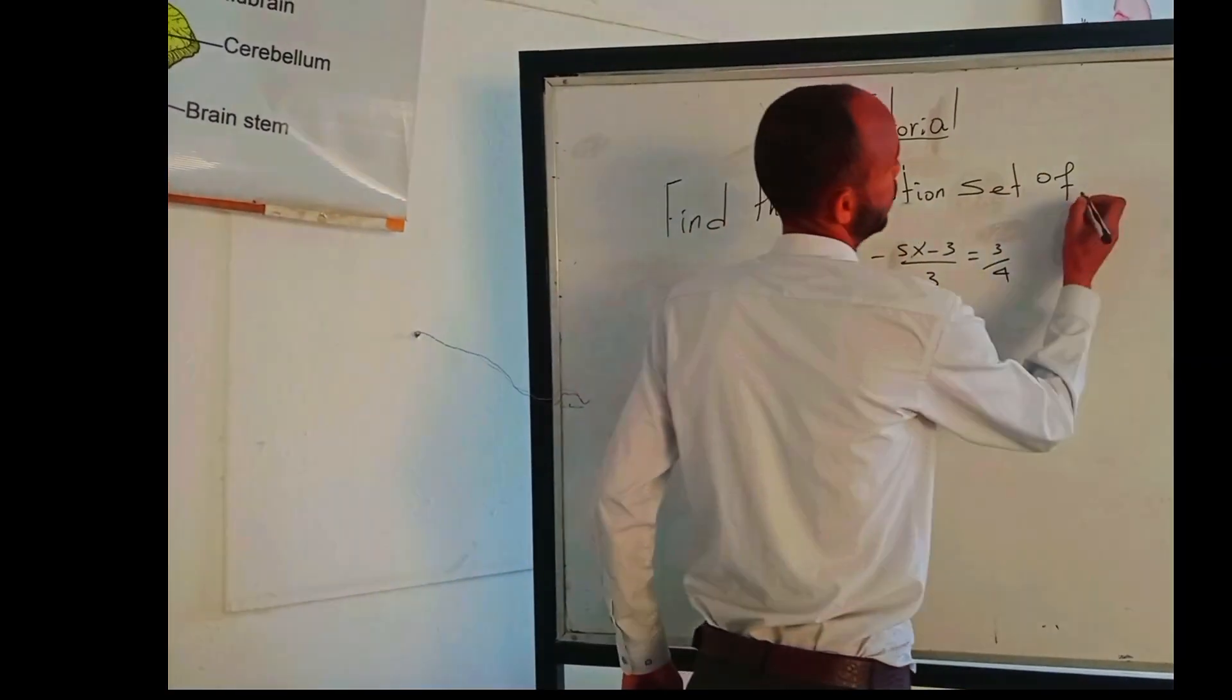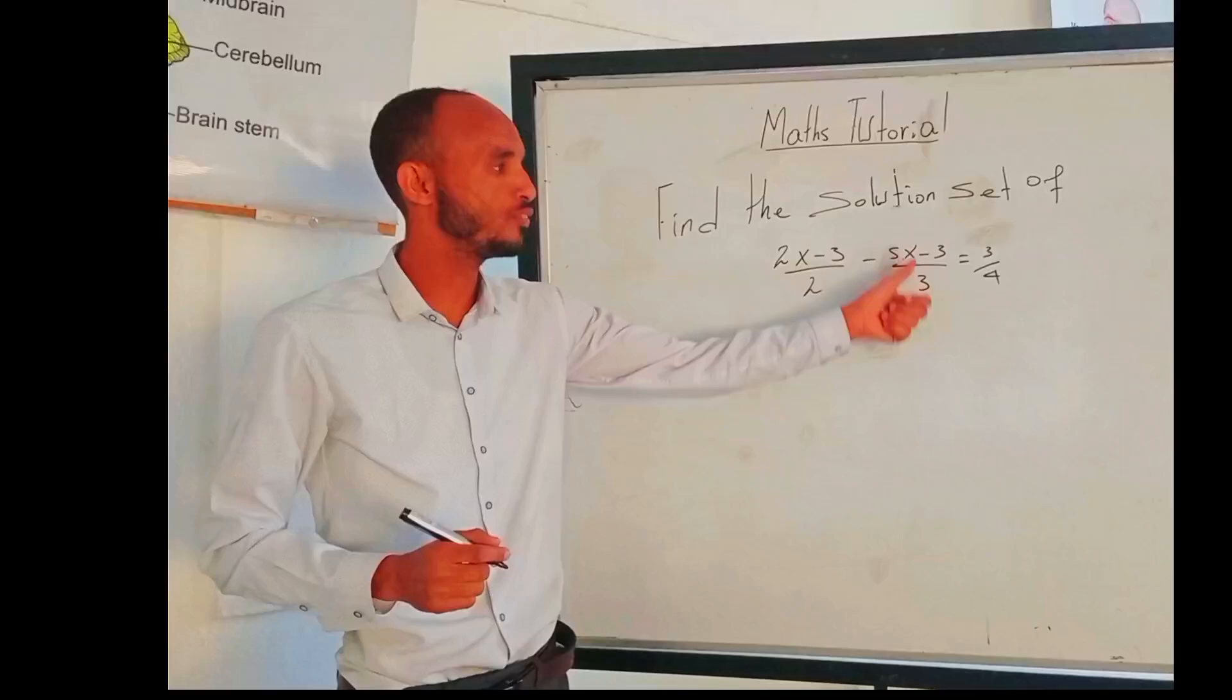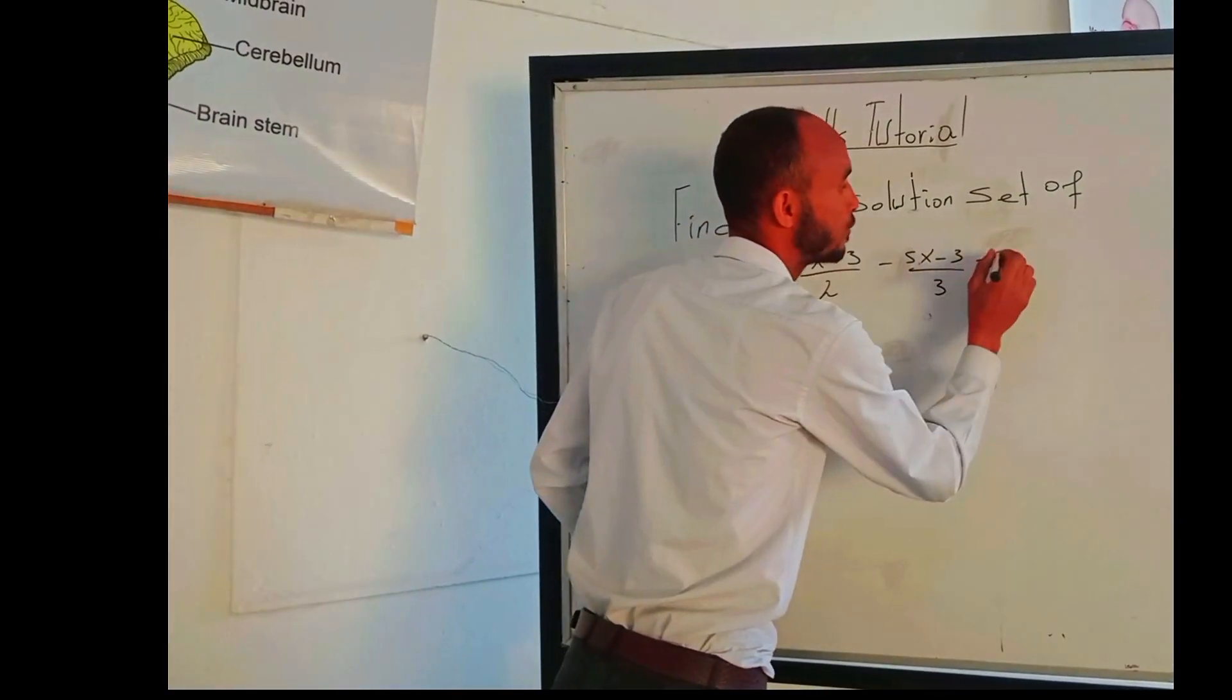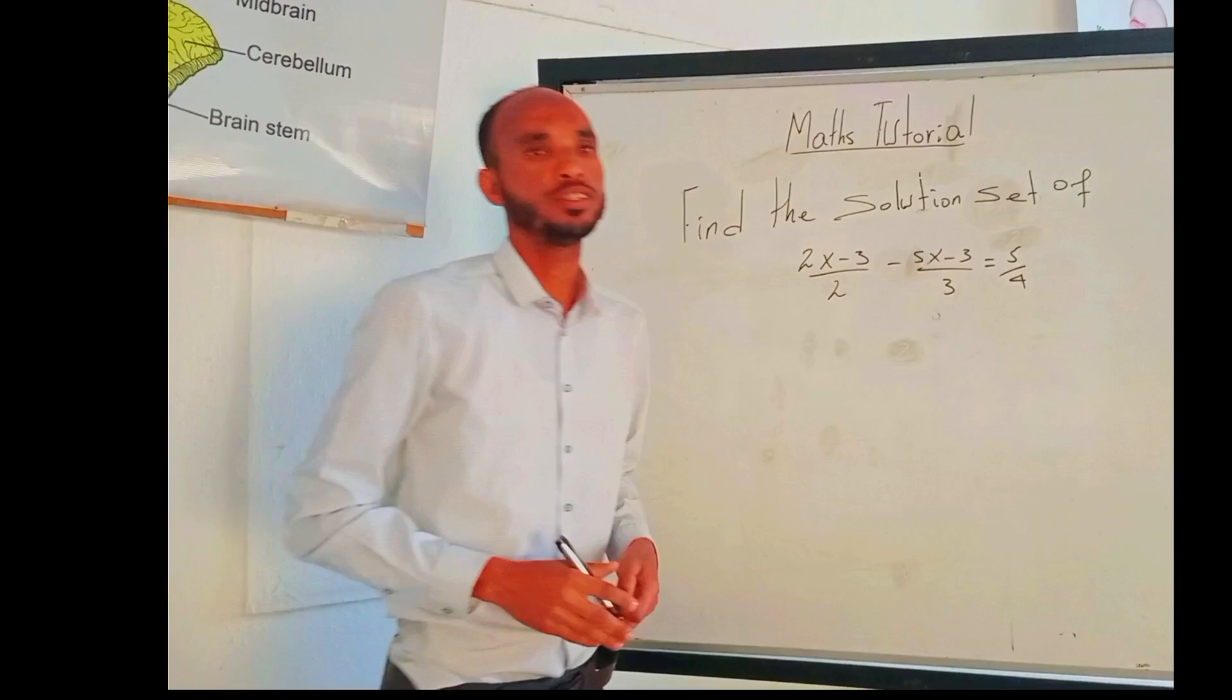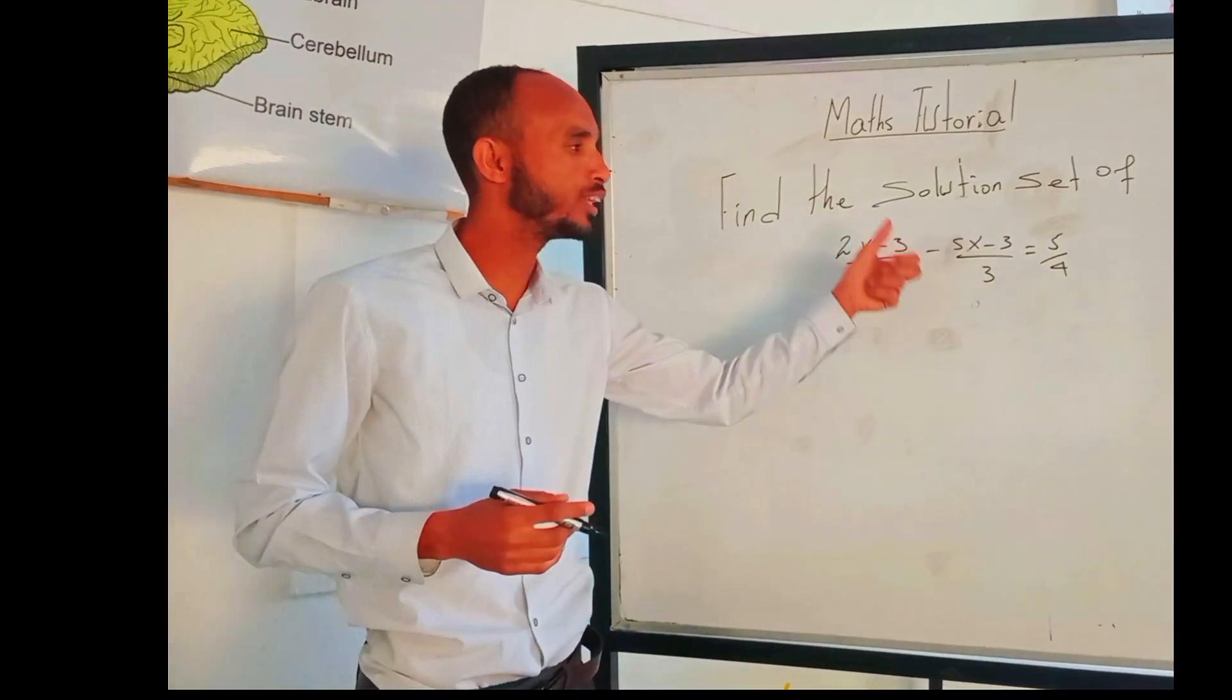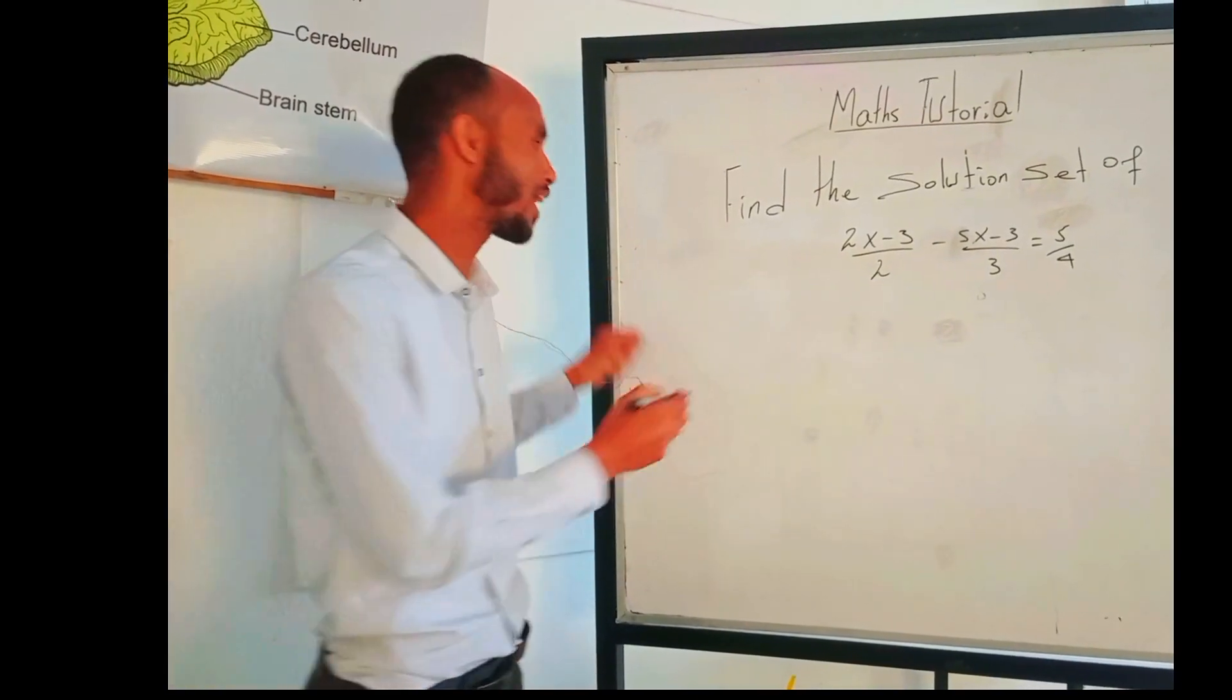To find the solution set of an equation: (2x - 3)/2 - (5x - 3)/3 = 5/4. As you know, you have to apply different techniques just like how to add or subtract fractions.